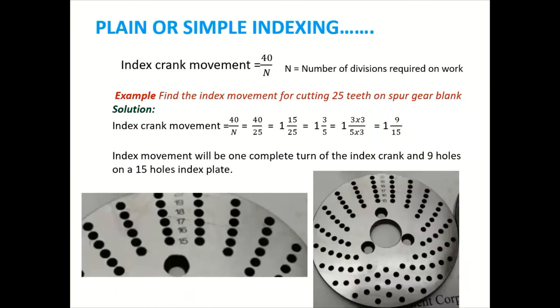So for that, again, the formula is that index crank movement is equal to 40 by N. So N is nothing but the number of divisions required on the work. So for that, I had taken one example. Find the index movement for cutting 25 teeth on the spur gear blank.